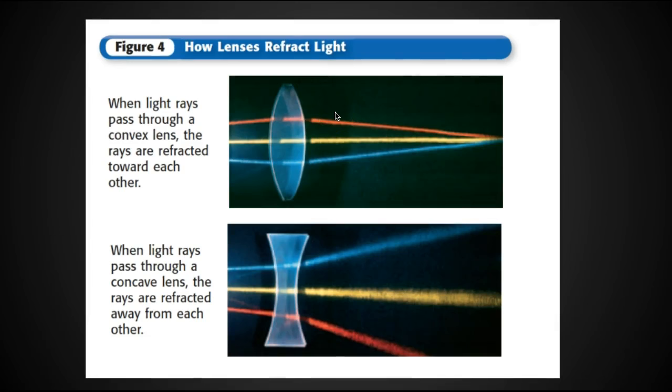These are the two major types of lenses we're going to talk about today. Convex, which is really thick in the middle, and they refract light towards each other, the beams towards each other. And then concave, and concave refracts light away from each other.